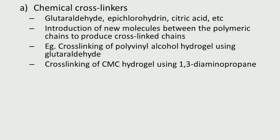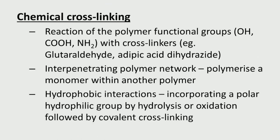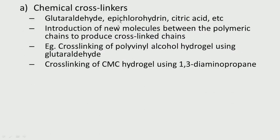Common chemical crosslinkers include glutaraldehyde, epichlorohydrin, and citric acid — these introduce new molecules between polymeric chains to produce crosslinking. For example: crosslinking of PVA hydrogel using glutaraldehyde, and crosslinking of CMC using 1,3-diaminopropane.